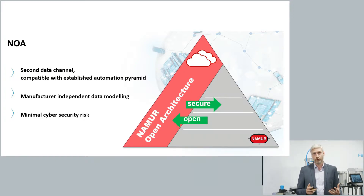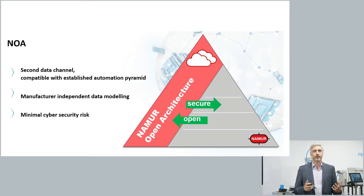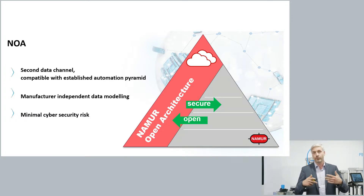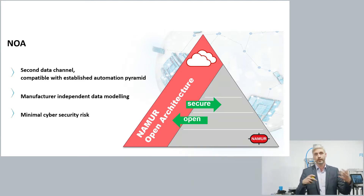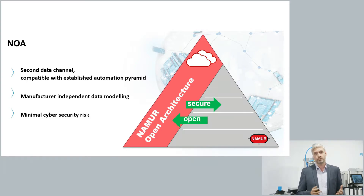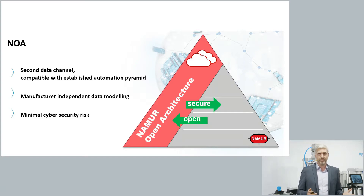The second important aspect of NOA is vendor-independent data modeling — a common language for your assets. A given class of assets needs to provide a standardized, specific set of data in a specific way, so you can easily compare data from one automation technology provider with another. Since plants typically have assets from many different vendors, this lets you compare them all in a unified, centralized view, bringing asset management to the next level.